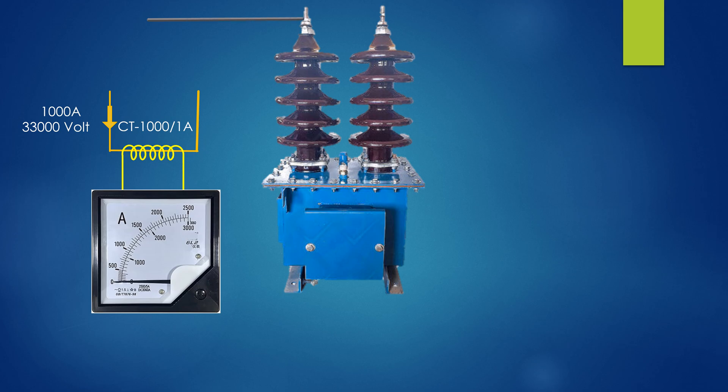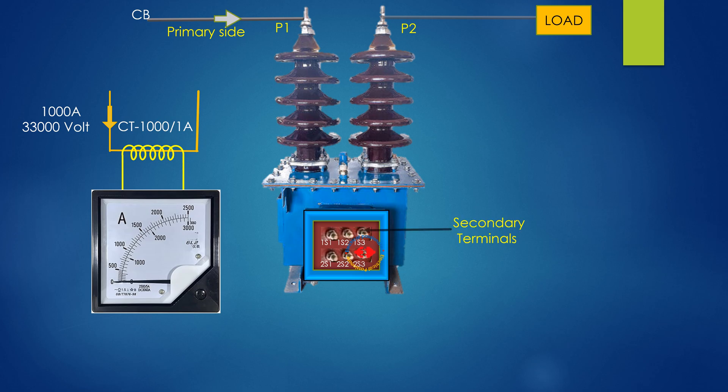Obviously, CT primary is connected with load in series. This is a picture of a 33kV CT having primary leads P1 and P2, and secondary has two cores with leads 1S1, 1S2, 1S3 and 2S1, 2S2 and 2S3. When a new CT is brought for installation, we have seen secondaries are shorted so that by any chance the secondary terminals are not left open circuited before termination. And if primary is connected with power circuit erroneously, no problem is occurred.